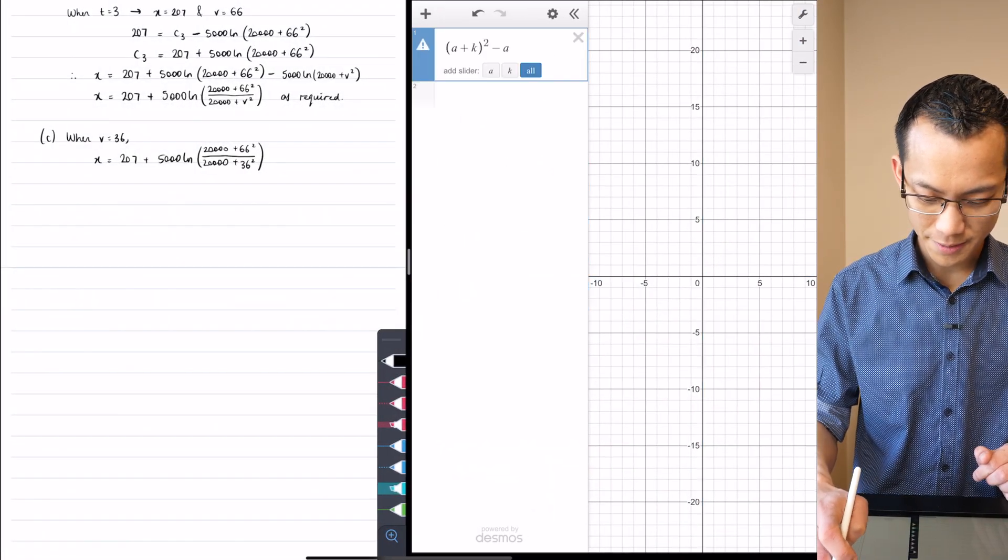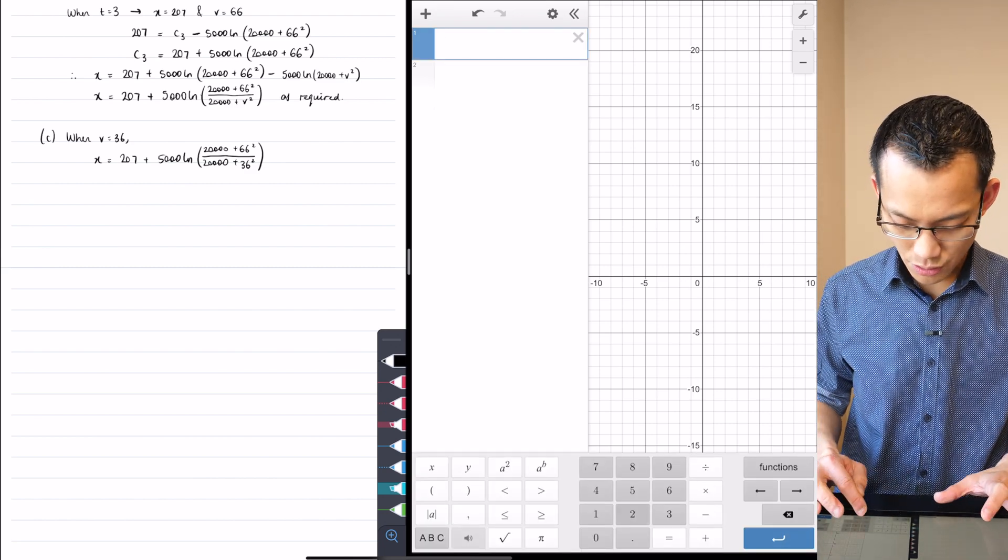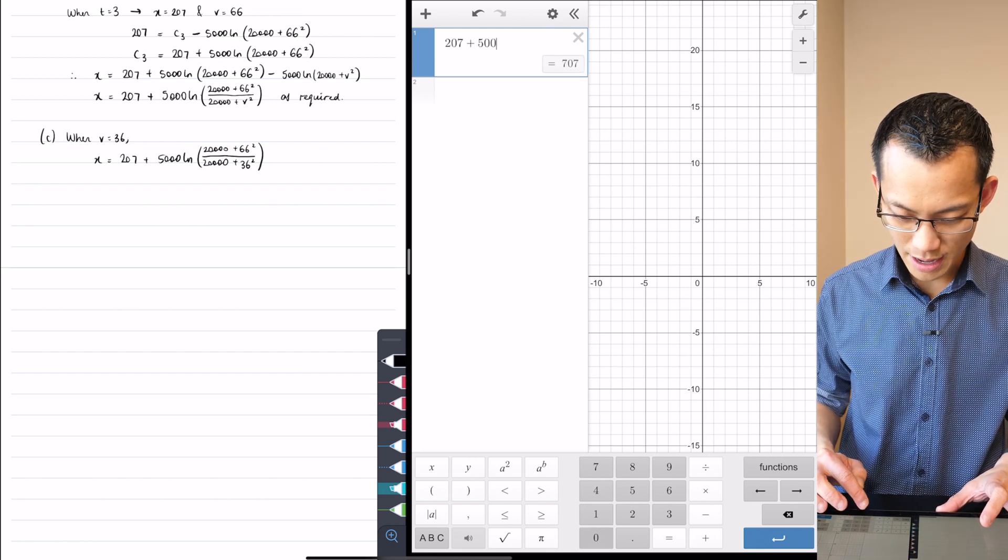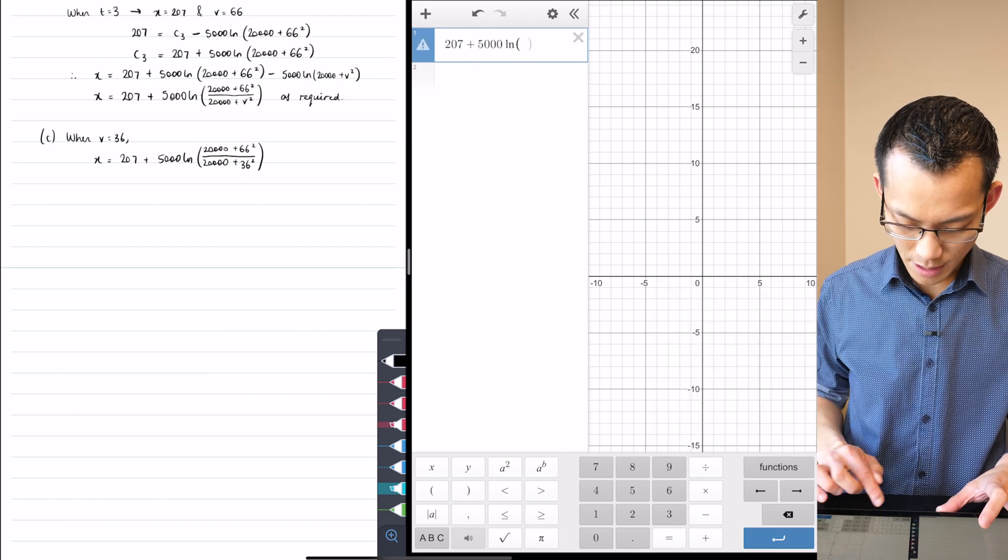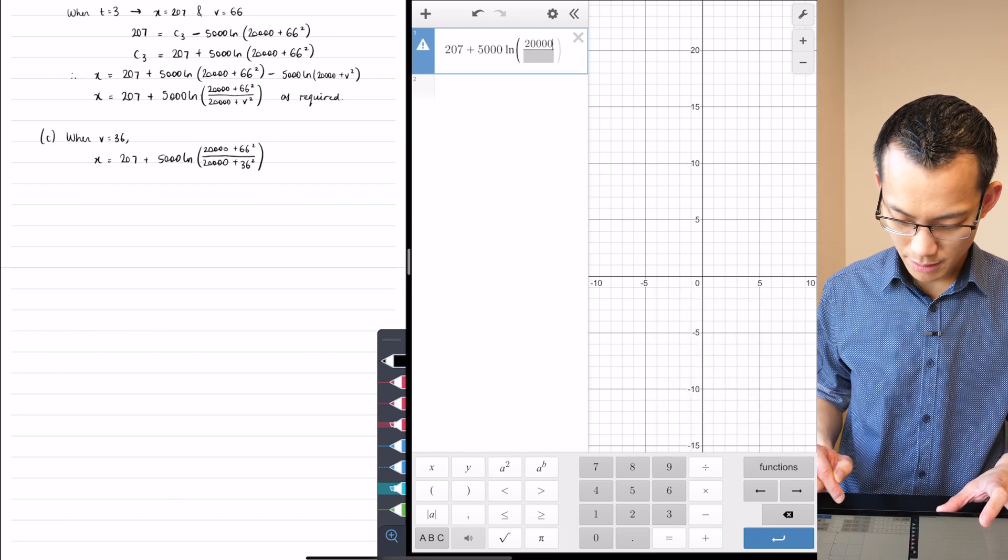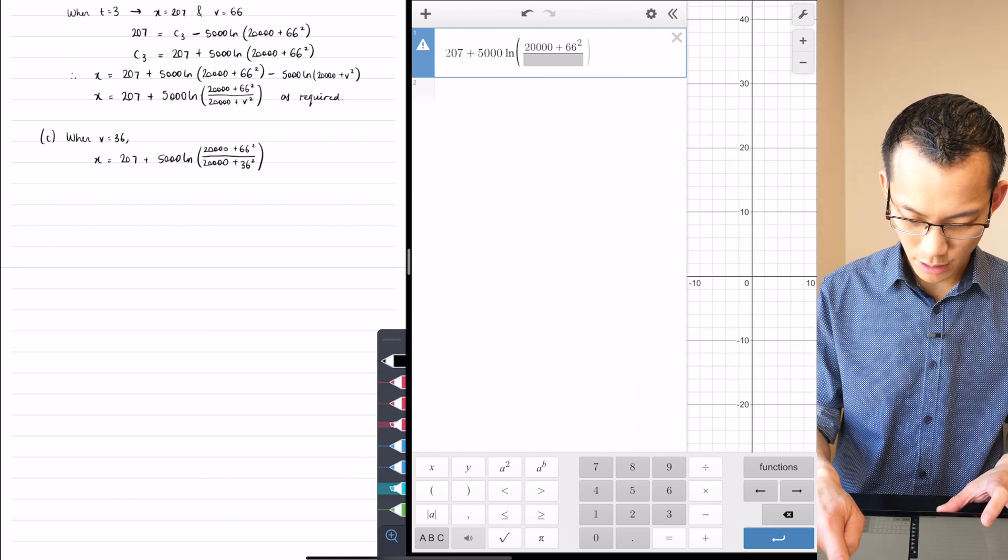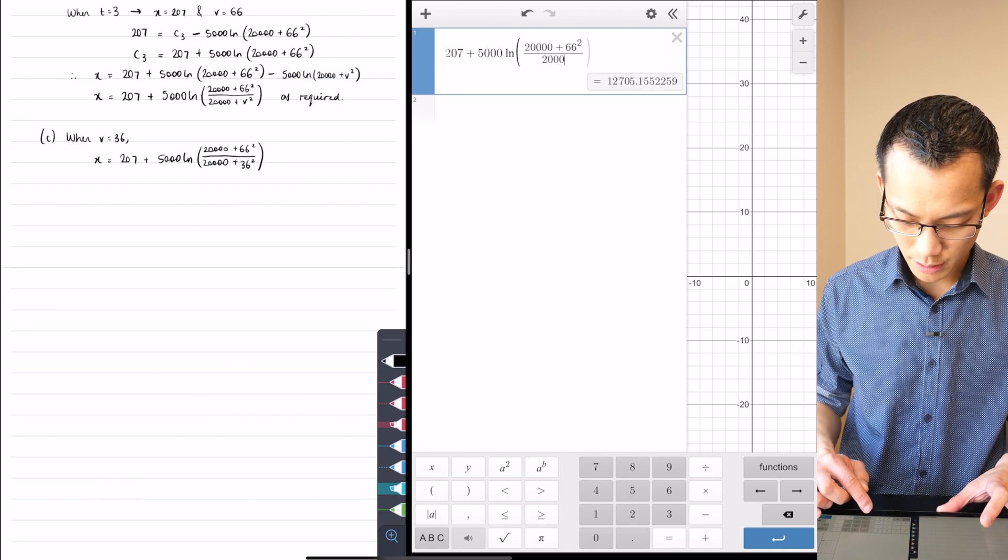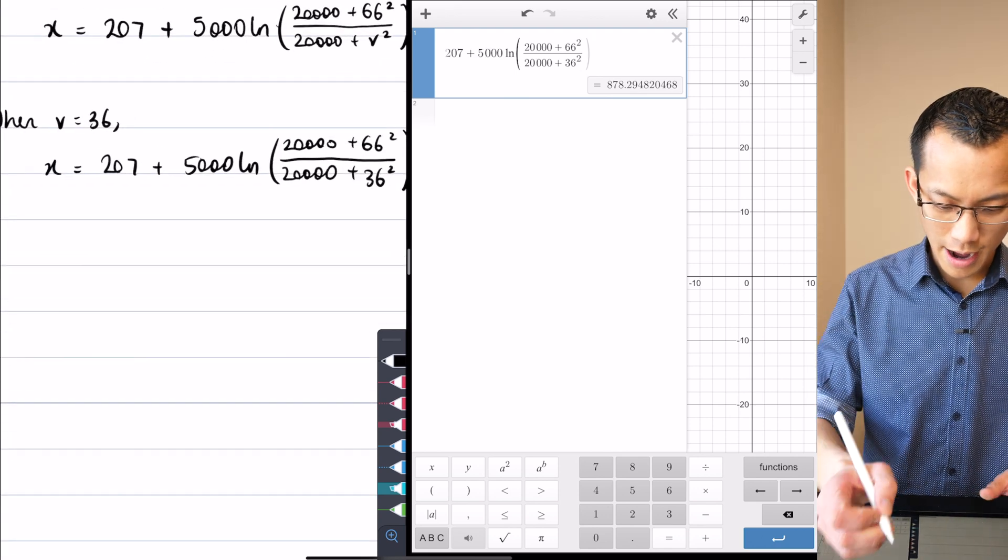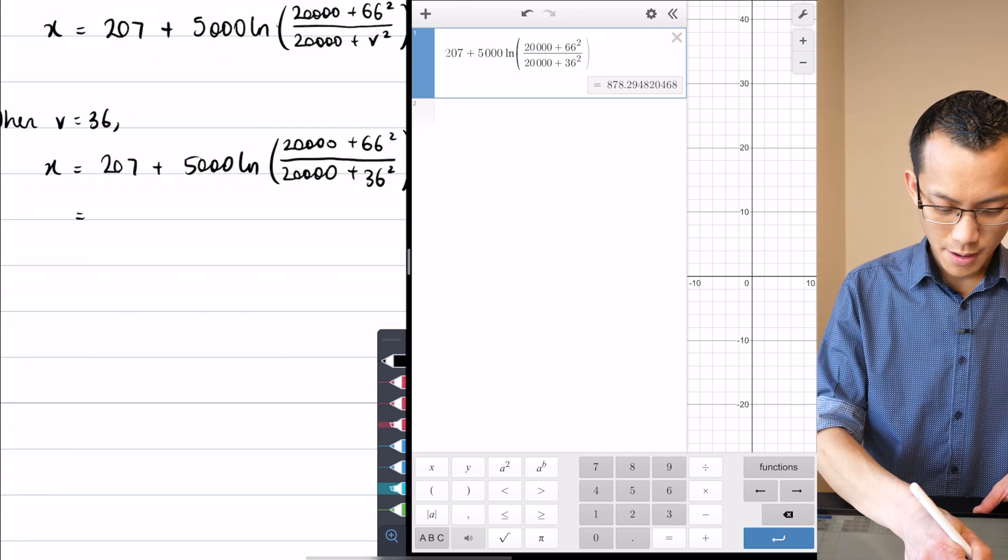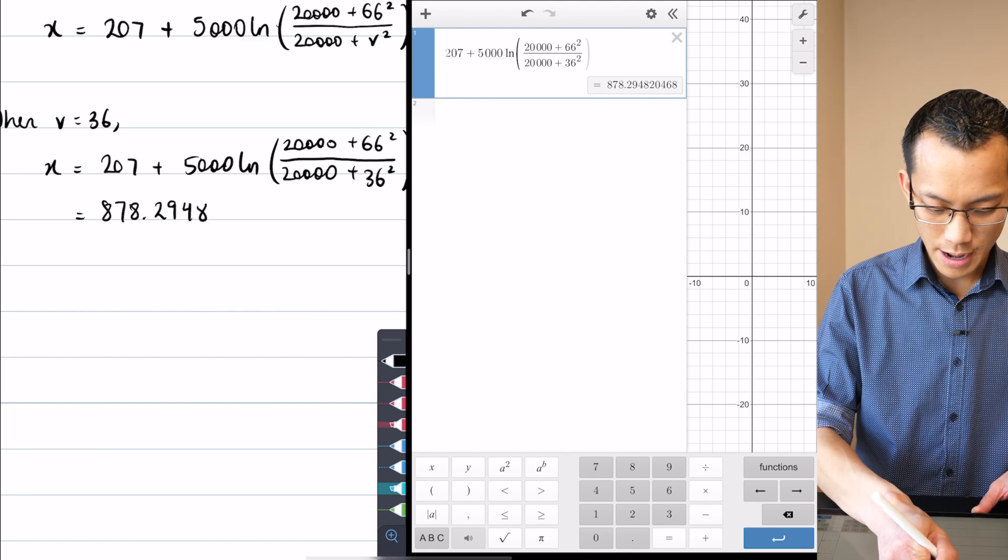I'm going to reach over for a calculator. Okay, let's have a look here. Some old working I was doing there. All right, so let's have a go with this. This is going to be 207 plus 5,000. I'm going to need my log function here. I've got a fraction in there and it's 20,000 plus, let's make it bigger, 66 squared. And then on the denominator, 20,000 plus 36 squared. All right, what are we getting here?